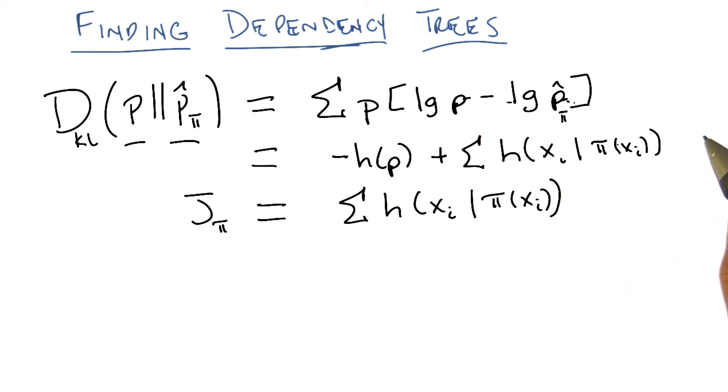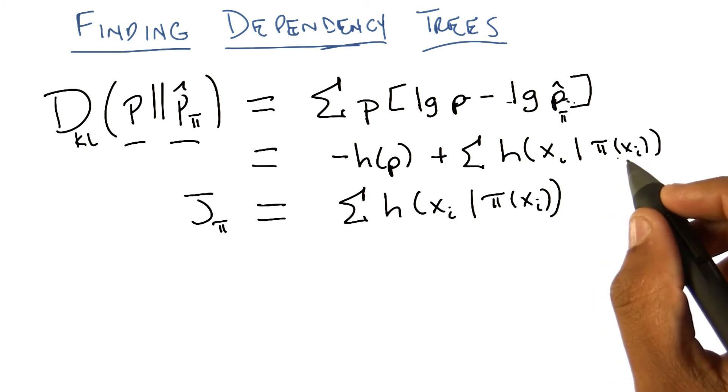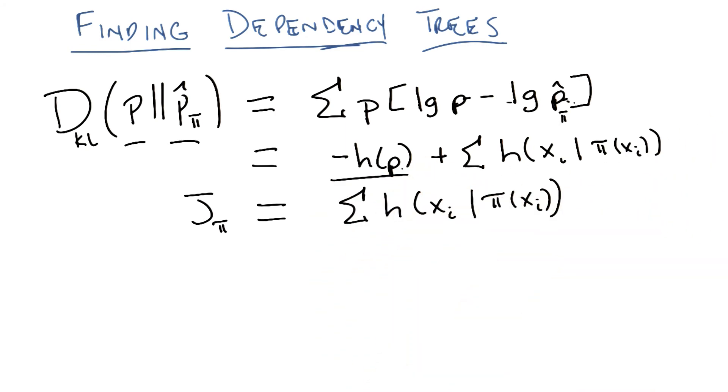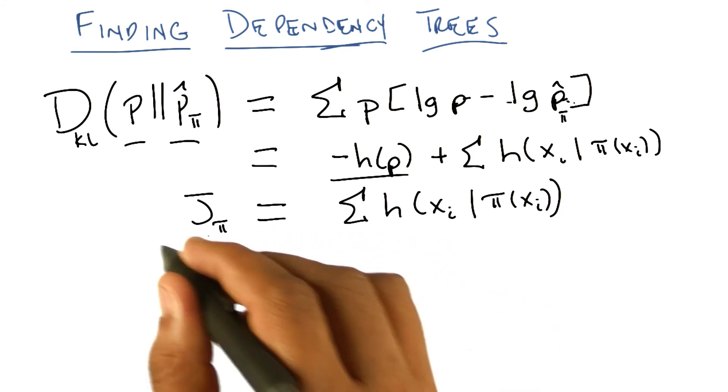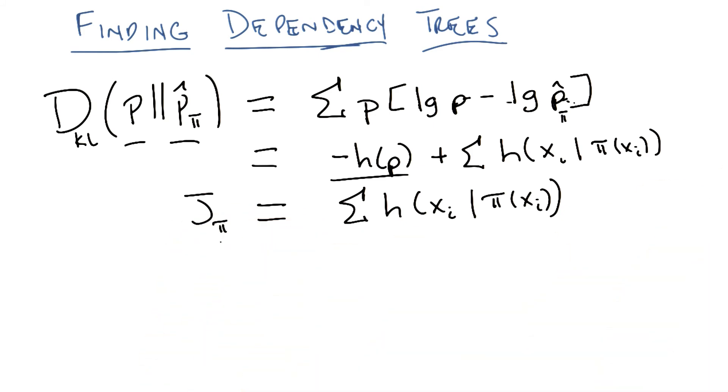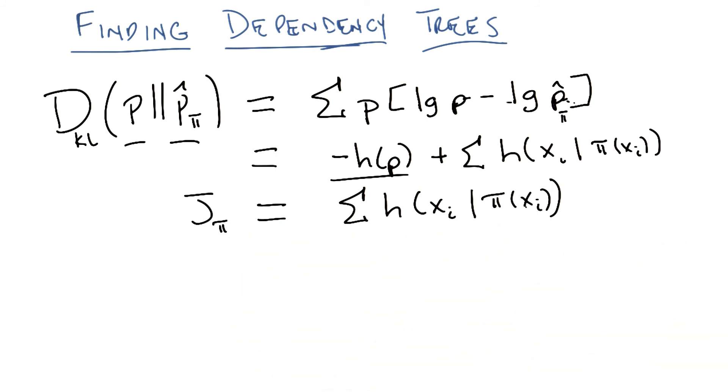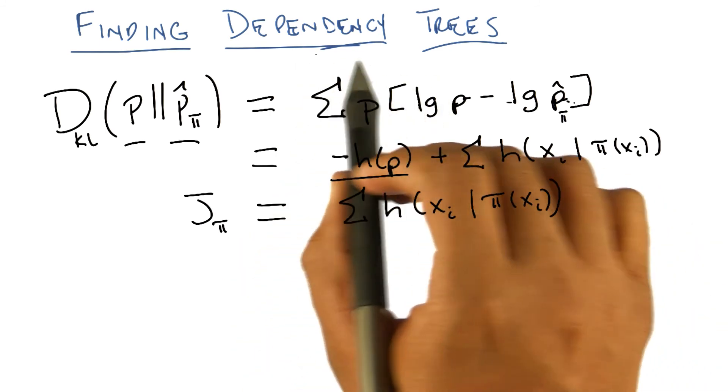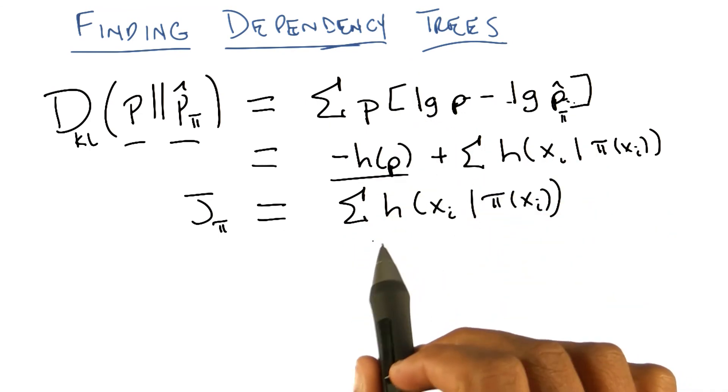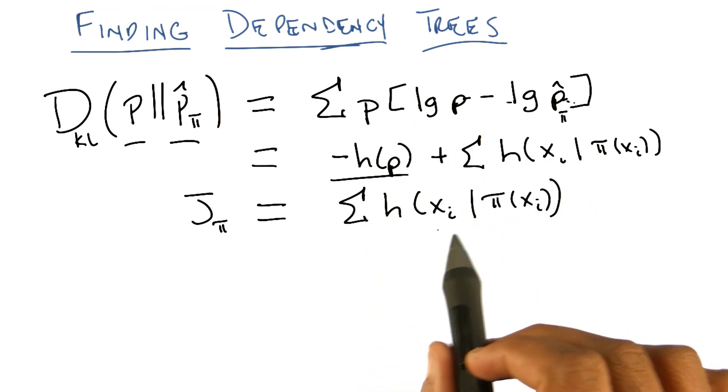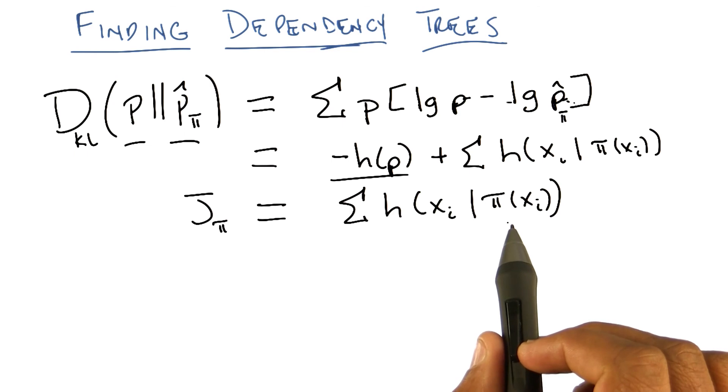Okay? Well, in the end, all we care about is finding the best pi, so this term doesn't matter at all. And so we end up with a kind of cost function that we would like to minimize, which I'm going to call here J, which depends upon pi, which is just the sum of all the conditional entropies. Basically, the best tree that we can find will be the one that minimizes all of the entropy for each of the features given its parents. Does that make any intuitive sense to you?